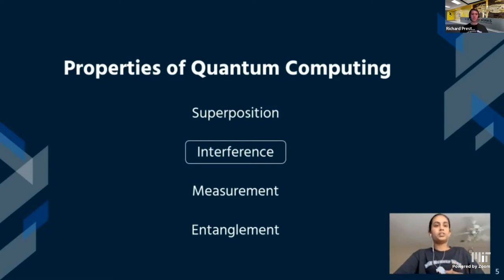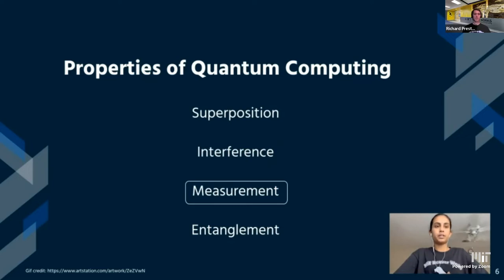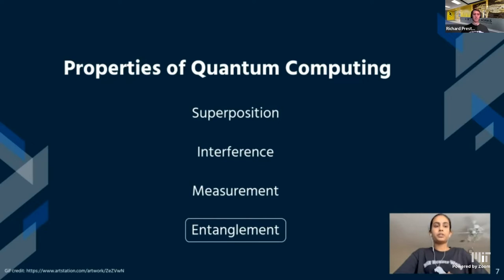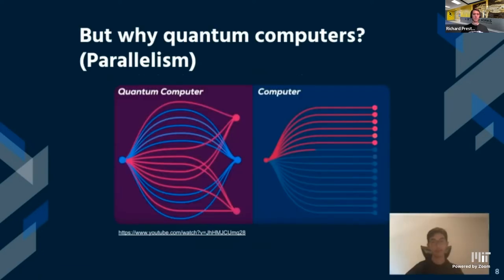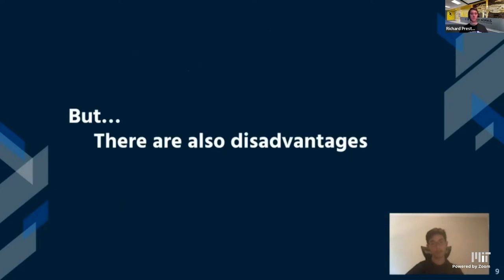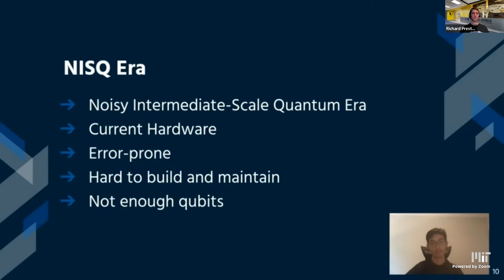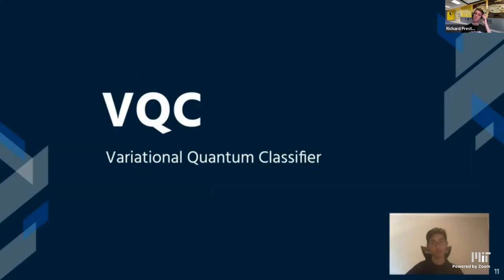While superposition allows for the creation of these possibilities, interference amplifies the possibilities we want and reduces the possibilities of states we do not want when we finally measure the qubits. Taking the analogy of a coin: using superposition and interference, the coin is now spinning, but we only know if it's heads or tails once the coin stops — this concept is known as measurement. The last fundamental property is entanglement: when we measure a single qubit and based on the output, we're able to determine the states of the other qubits. The main advantage of these properties in quantum computing is parallelism — whereas in classical computing one step is completed at a time, in quantum computing all steps happen simultaneously. Due to modern hardware obstacles, we are limited in the number of functional qubits, so we ultimately chose the variational quantum classifier as our final project.